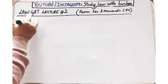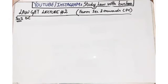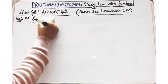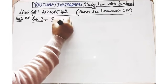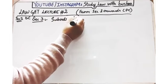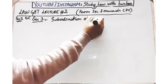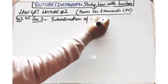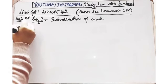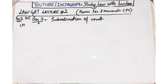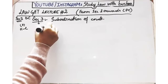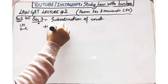In the previous video we discussed the introduction and Section 2, that is the definition clauses. In today's video we are going to start from Section 3. Section 3 basically deals with subordination of courts. It is a very simple section — it explains the hierarchy of the courts.